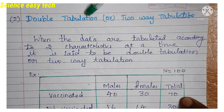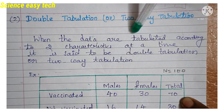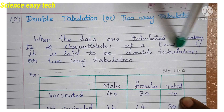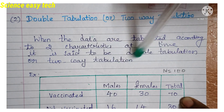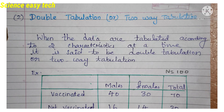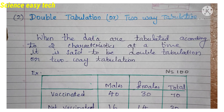Next is double tabulation or two-way tabulation. When data are tabulated according to two characteristics at a time, it is called double tabulation or two-way tabulation. In simple tabulation you represent only one characteristic, whereas in double tabulation you represent two characteristics at a time.